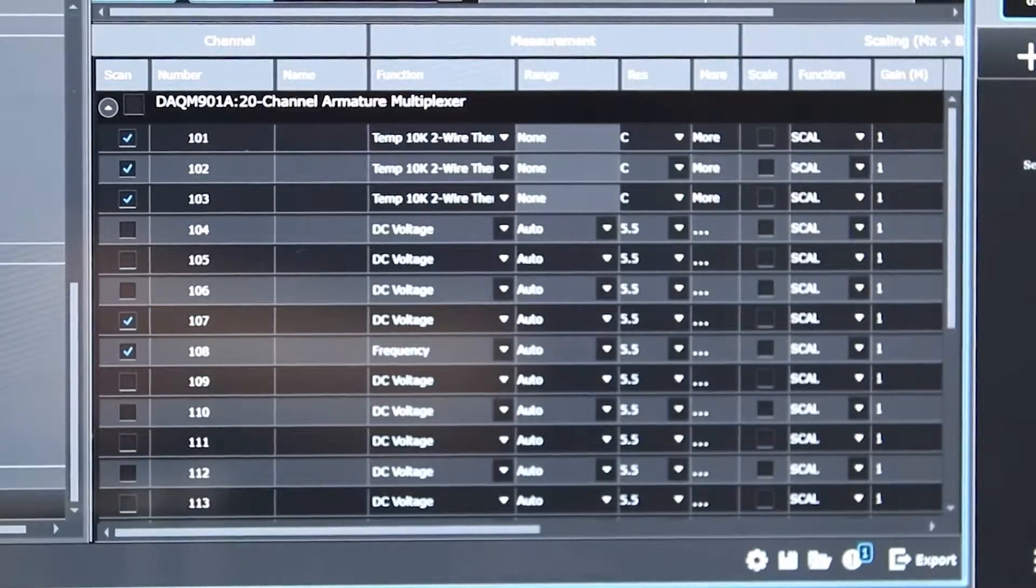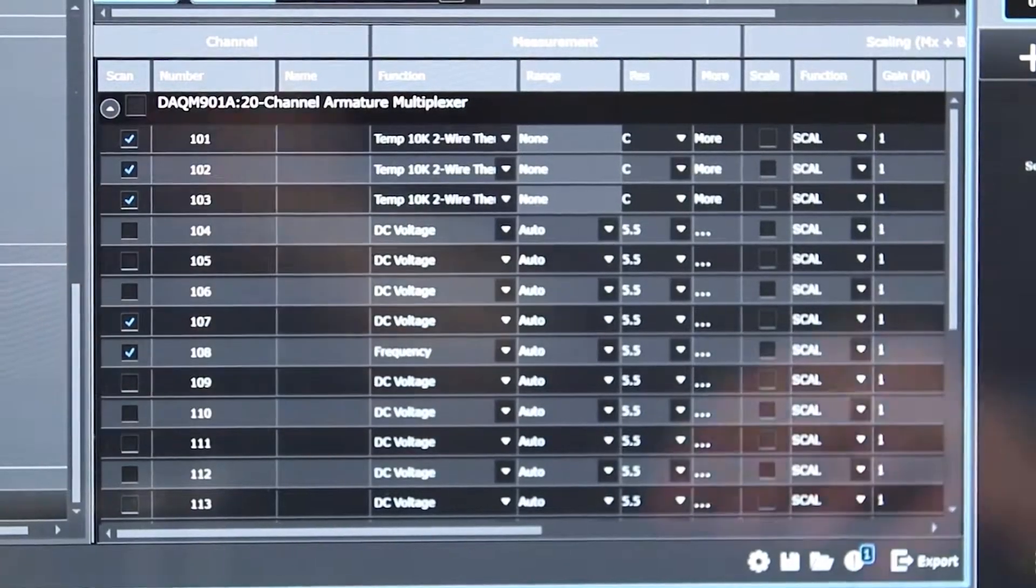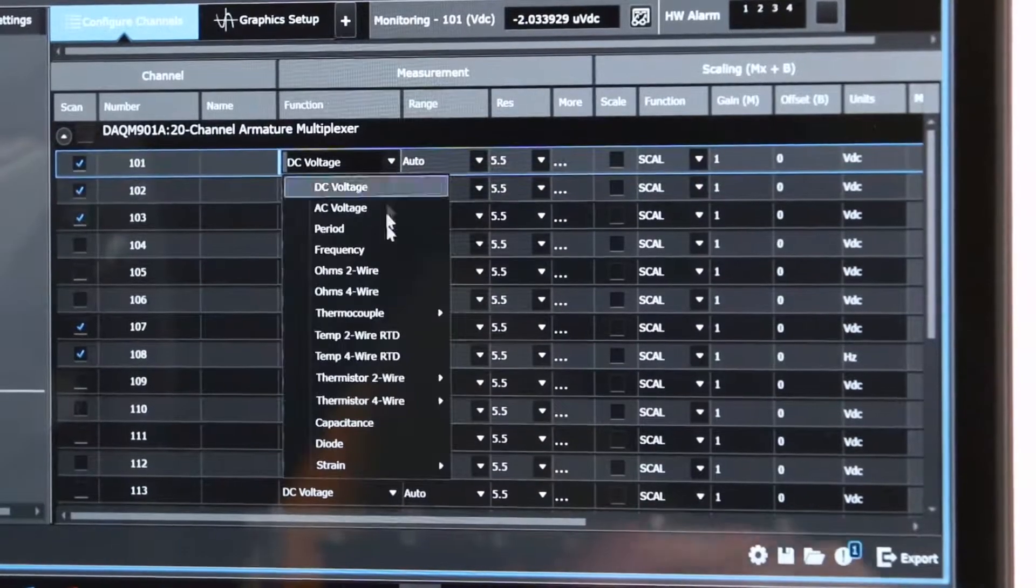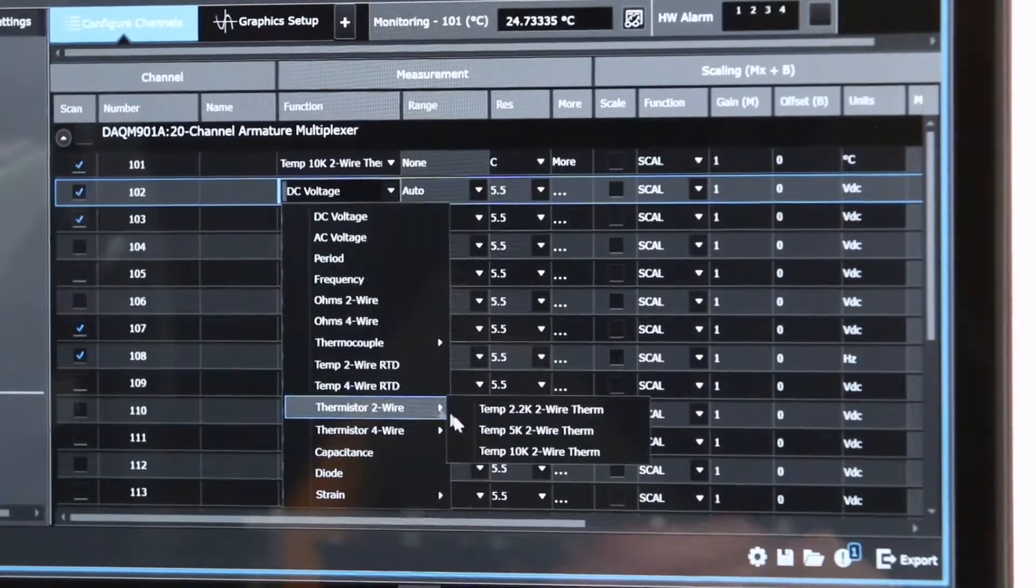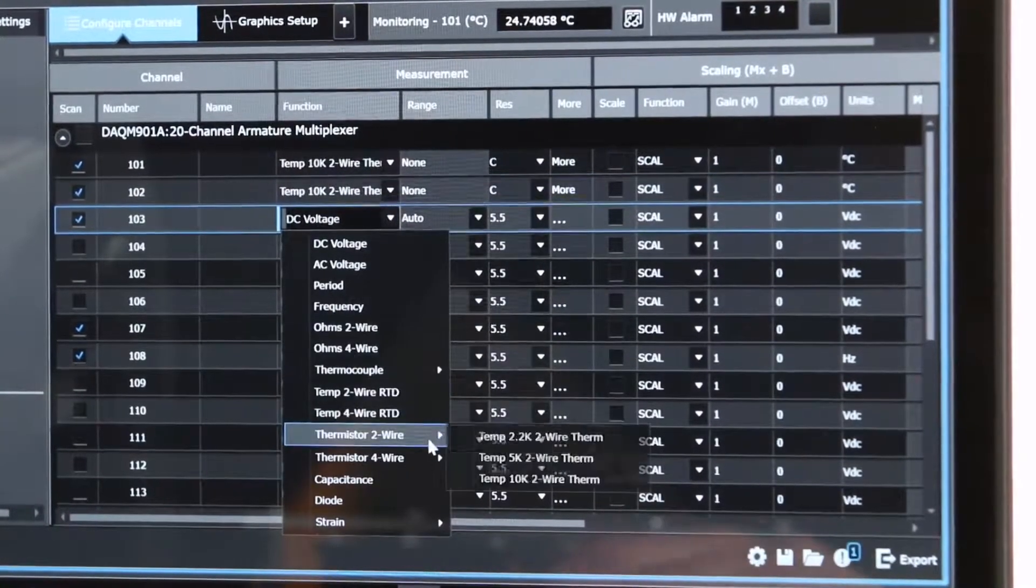The configuration panel allows you to see all the channel measurements in one view. Configuration for each channel is as easy as point and click when selecting measurement functions, range, resolution, scaling and if needed access to advanced controls such as gain, offset and alarm settings.